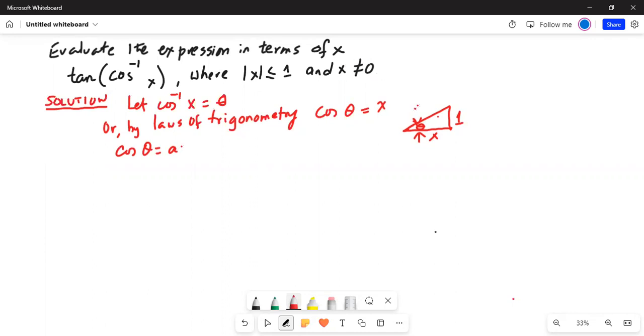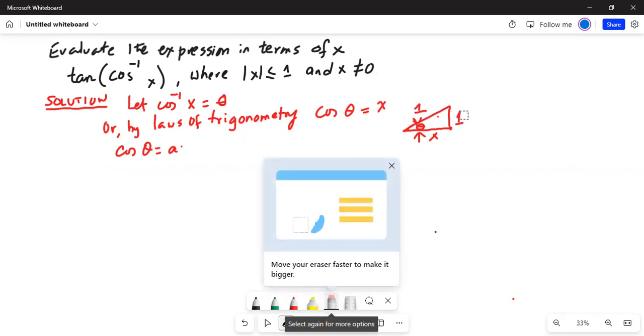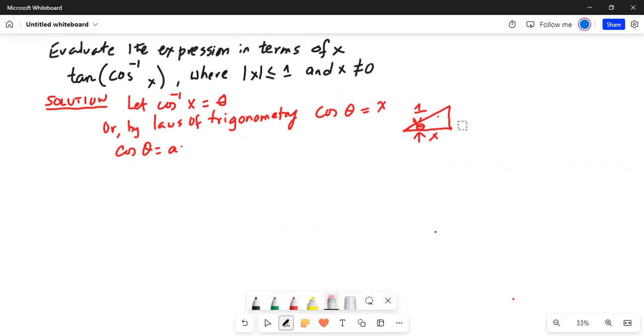This is 1 over here. Cosine of theta is adjacent side, where this is 90 degrees of course, adjacent by hypotenuse.